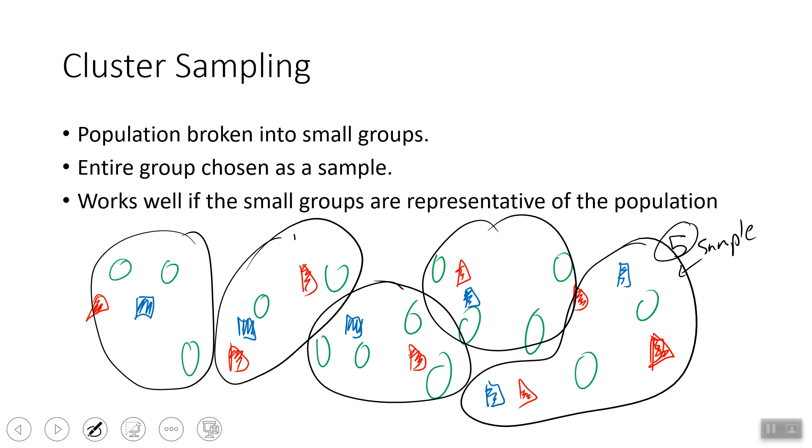And that would be my sample. And the cluster sampling works well if the small groups are representative of the population. And we'll see here, maybe this fifth, I mean, I just got lucky that I chose the fifth one because the fifth one isn't necessarily representative. It has roughly equal numbers, red, blue, and green, but we know that there's more green in our population. And so the green circles might be underrepresented in this cluster. And so that's a little bit of your R homework sampling thing that you want to look at.